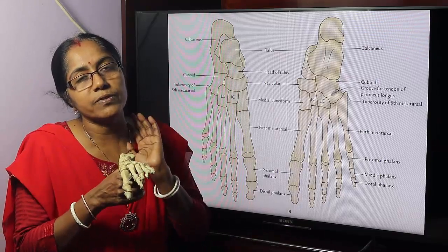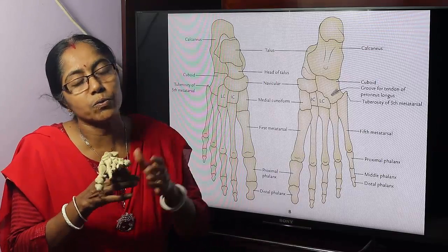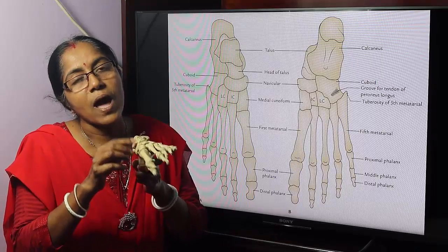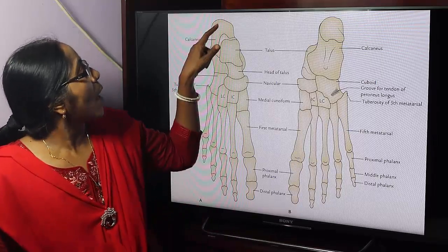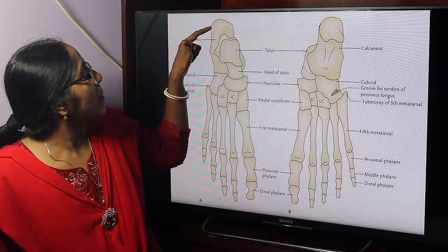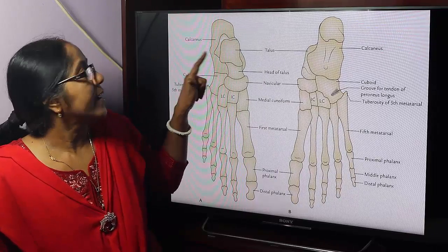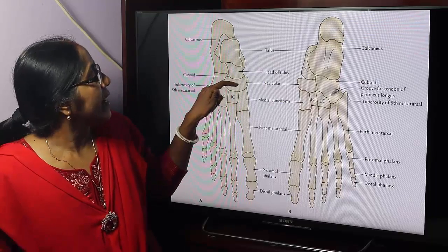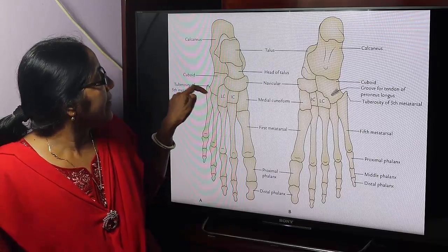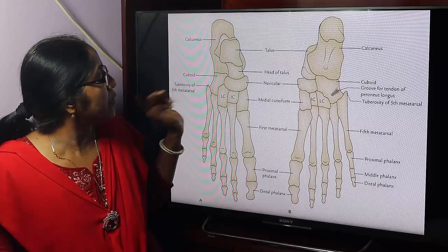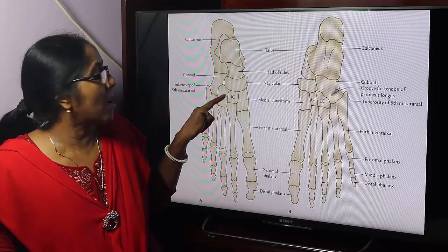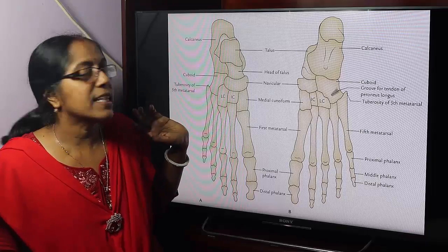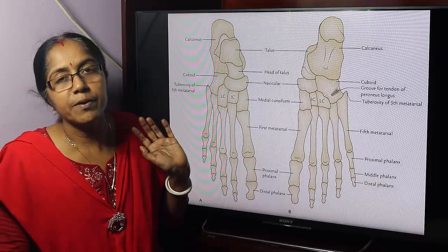The tarsal bones are arranged in three rows: proximal row, middle row, and distal row. The proximal row contains the calcaneus and talus. The middle row contains only the navicular bone. And in the distal row there are three cuneiform bones — medial cuneiform, intermediate cuneiform, lateral cuneiform — and the cuboid bone.